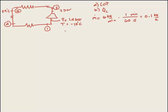So in order to compute the COP, it's the desired output which is QL because it's a refrigeration system, divided by the work inlet. We know that the desired output is mass flow rate times H1 minus H4